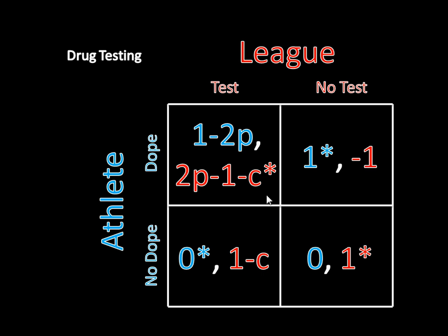The game actually looks very close to matching pennies — it's a guessing game where the athlete wants to dope if the league isn't going to test, but if the athlete doesn't dope, the league won't want to test. And if the league isn't testing, the athlete wants to dope. You get caught in a loop ensuring there's no pure strategy Nash equilibrium.